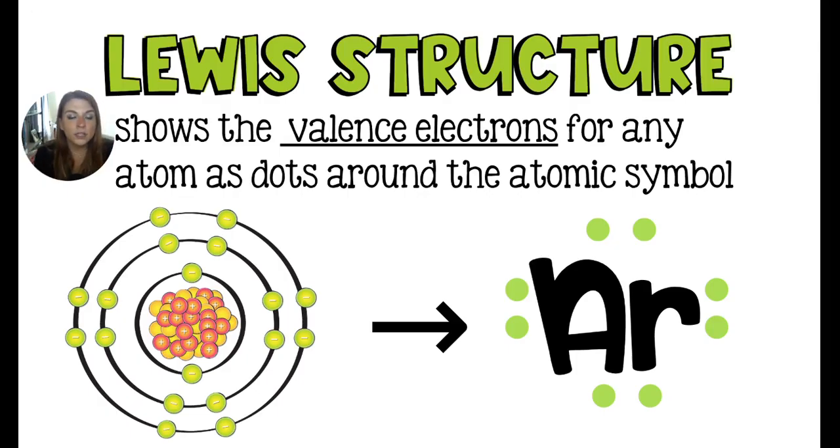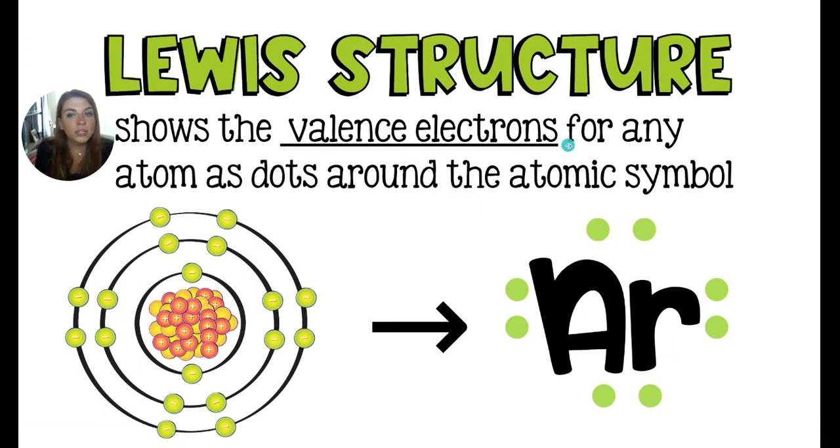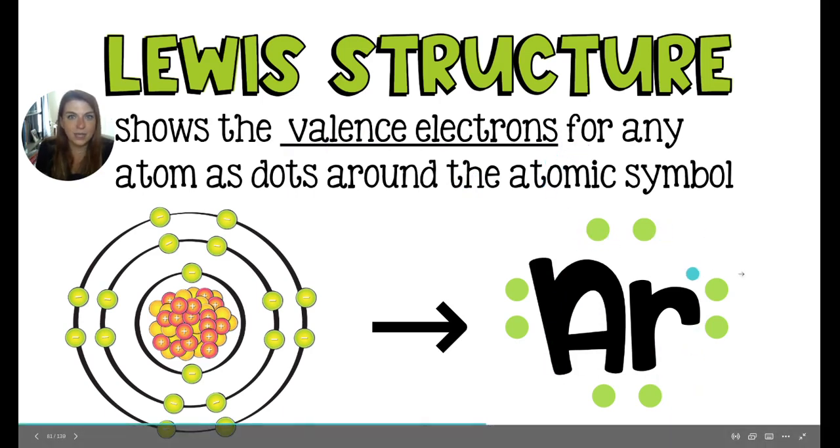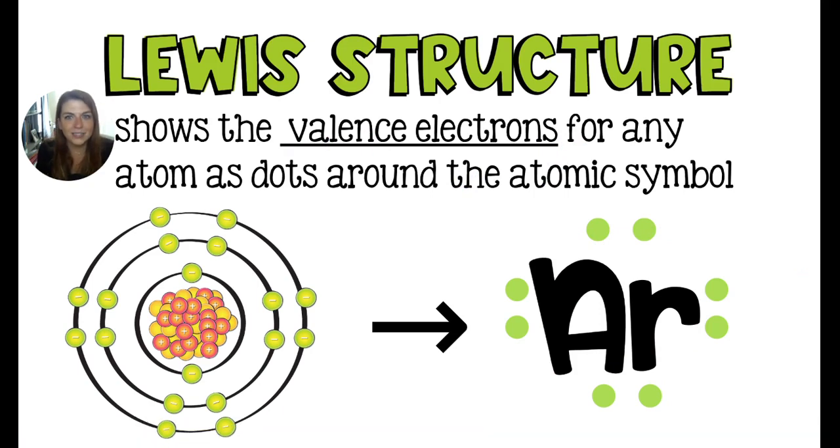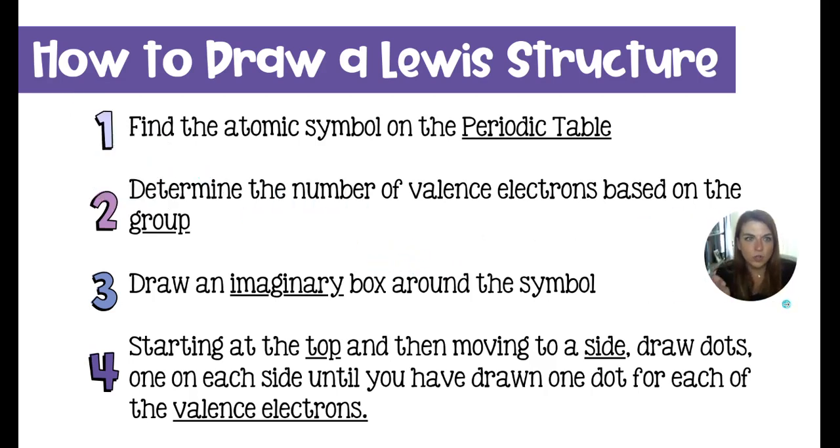So the hack for the Lewis structure is that it turns a really scary looking Bohr model with lots of tiny little subatomic particles into something way more manageable. It is going to show only the valence electrons for an atom as dots drawn around its atomic symbol. And once you get the hang of this, it's super, super easy. So here's how to draw a Lewis structure. And this is for atoms. You can also draw Lewis structures for molecules, and that's going to be a way more complex process. This right here, we're just talking about drawing for individual atoms, which is where you'd have to start anyway.